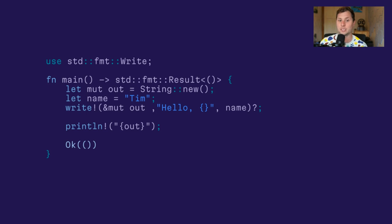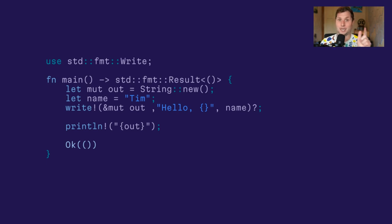I then discovered that you could actually return a Result from main, and with the help of the question mark operator, this didn't seem very different from before — I could just bubble up the error to main. I needed this weird thing at the bottom though: `Ok(())`. The inner parentheses are called the unit type, and this is the Ok variant of Result. The word 'variant' comes from enum. Enums in Rust have variants, and Result can have one of two.